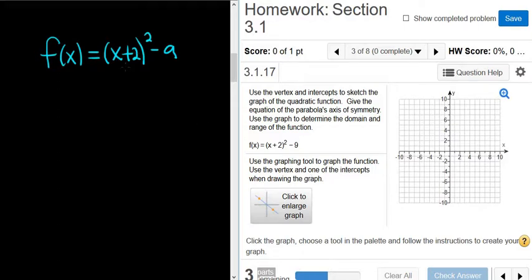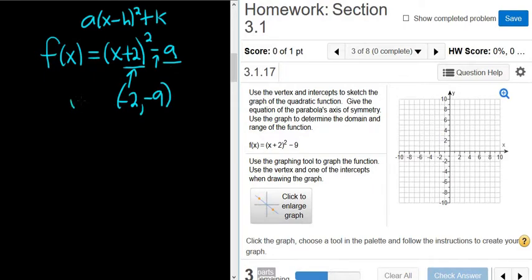So to find the vertex in this problem, since it's written in standard form, remember standard form means it's written like this. What we can do is we can use our trick. We can switch it and keep it. So you switch the sign here, it's negative 2, and then you keep the sign here. It's already negative so it stays negative. So that is the vertex.